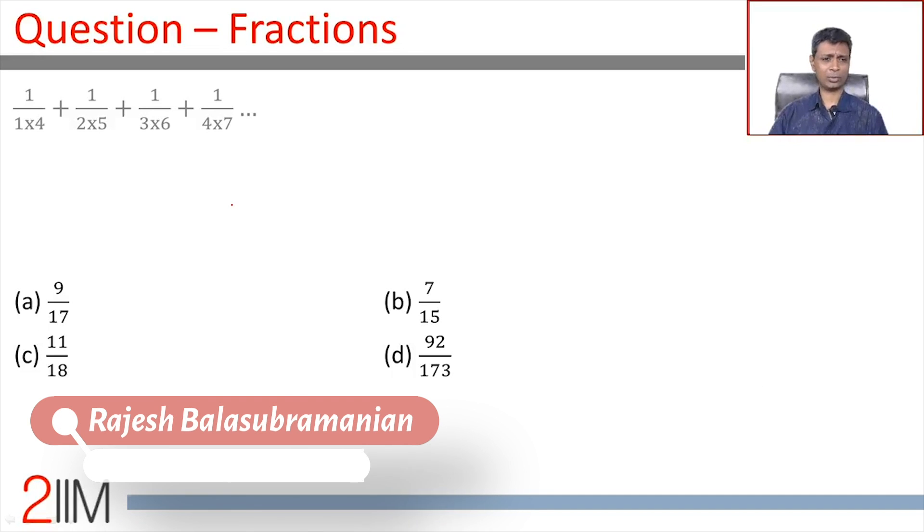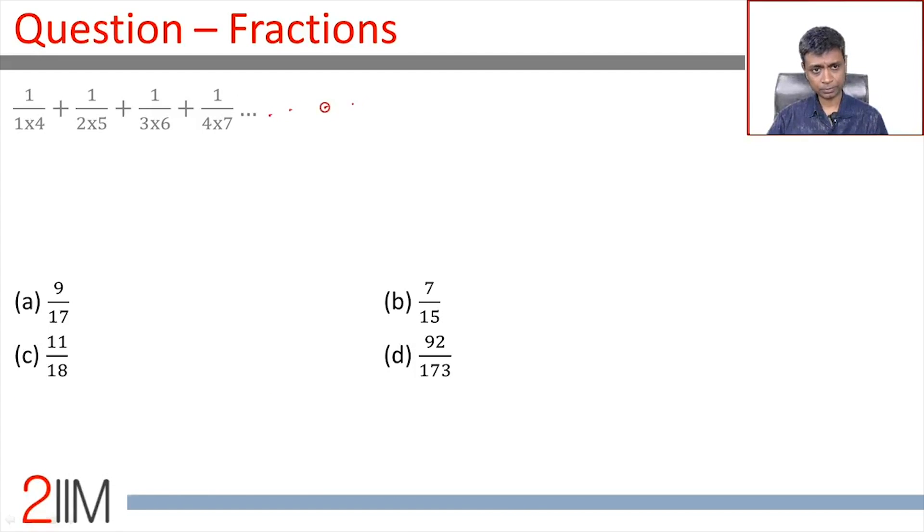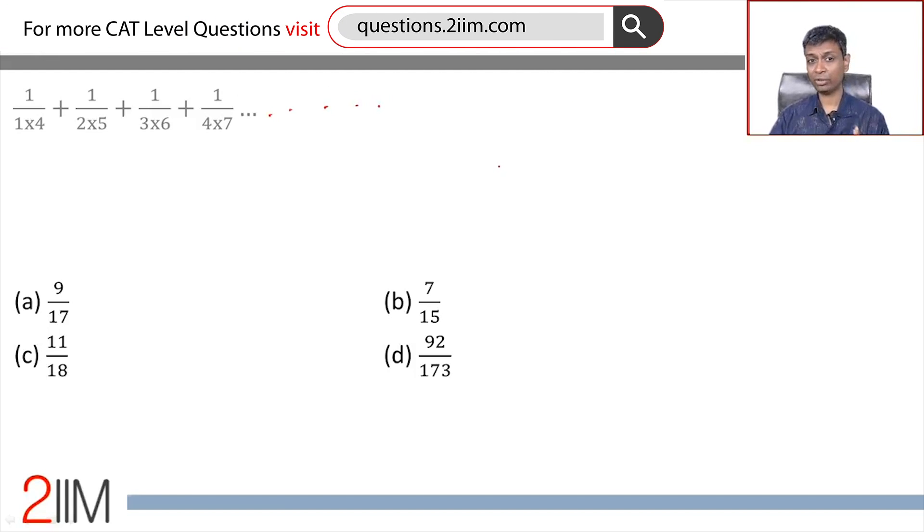This is a question on fractions, and a very good, very tough question. 1/(1×4) + 1/(2×5) + 1/(3×6) + 1/(4×7) and so on infinitely. What does this add up to? It's an infinite sequence. Those are tricky.